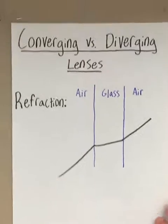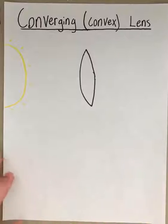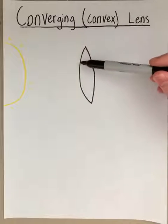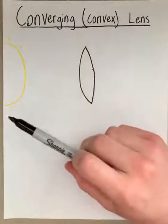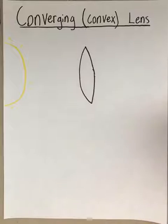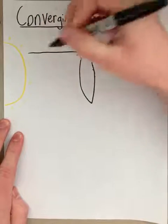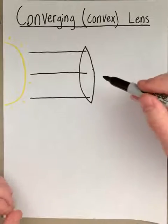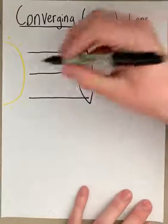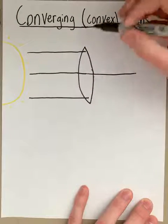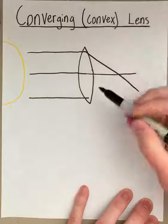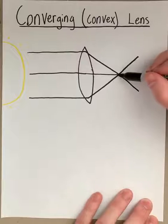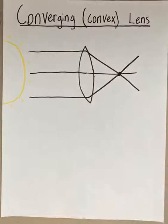Let's first explain what a converging or convex lens is. A convex lens is going to have this shape — a little bubble shape going outwards. If we have light rays traveling across and hitting the lens, once they hit the lens they're going to converge and come together — that's why it's called a converging lens. The axis or middle will keep going straight, but the rays above and below will bend back and converge to a certain point, which we call the focal point.